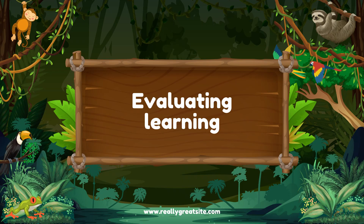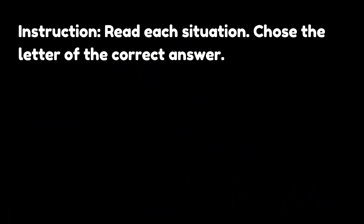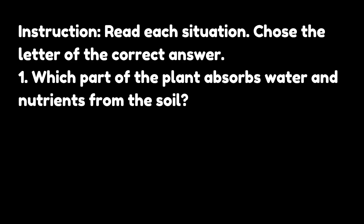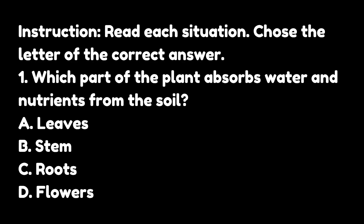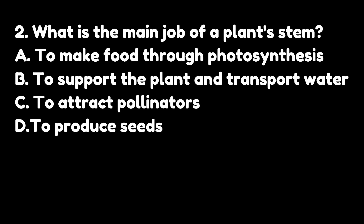Now, let's proceed to the evaluation. Instruction: Read each situation and choose the letter of the correct answer. For number 1, which part of the plant absorbs water and nutrients from the soil? For number 2, what is the main job of a plant stem? Options: A — to make food through photosynthesis; B — to support the plant and transport water; C — to attract pollinators; D — to produce seeds.